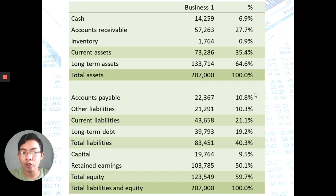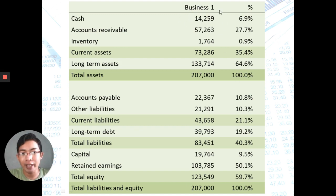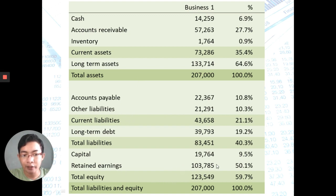Now let's apply Vertical Analysis to the balance sheet. In the balance sheet, the 100% figure is total assets and total liabilities and equity. You convert all asset figures — current and non-current — relative to total assets, to find the percentage composition of cash, accounts receivable, inventory, and so on. For example, cash is 14,259 divided by 207,000, giving 6.9% — meaning 6.9% of total assets is cash. On the liabilities and equity side, retained earnings of 103,785 divided by 207,000 gives 50.1%, meaning 50.1% of total liabilities and equity comes from retained earnings.